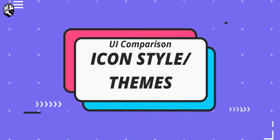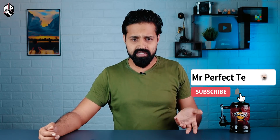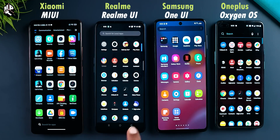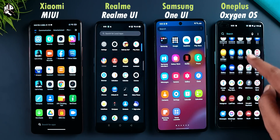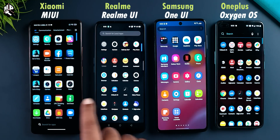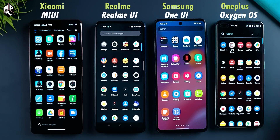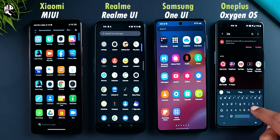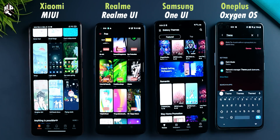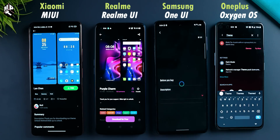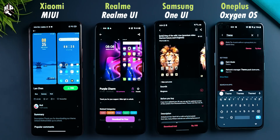The next feature is themes and icon style. Icon style is not available in all UIs by default. MIUI and Samsung's One UI allow changing the size of icons — you can see small-size icons. In Oxygen OS and Realme UI, there are also smaller icons. This is a personal preference. The theme store is available in MIUI, Realme UI, and Samsung's One UI. Oxygen OS has no theme store — it has a stock Android experience.